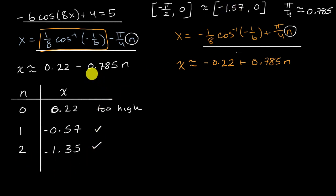Let's subtract 0.785 again. When n equals three, that would get us negative 2.14. Well, that's all of a sudden out of the interval because that's below the lower bound here. So this is too low. So using this expression, we've been able to find two x values that sit in the interval that we cared about.